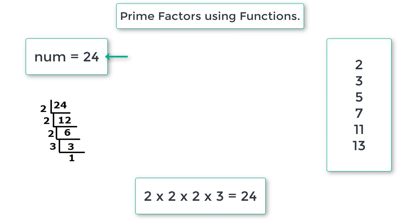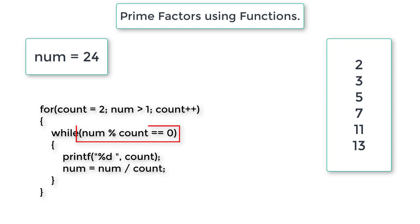So the prime factors of 24 is 2, 2, 2 and 3. We need to modulo divide this number by prime numbers from smallest prime number 2 and then 3 and then 5 and then 7, 11, 13 and so on. So here is our logic for loop and while loop.